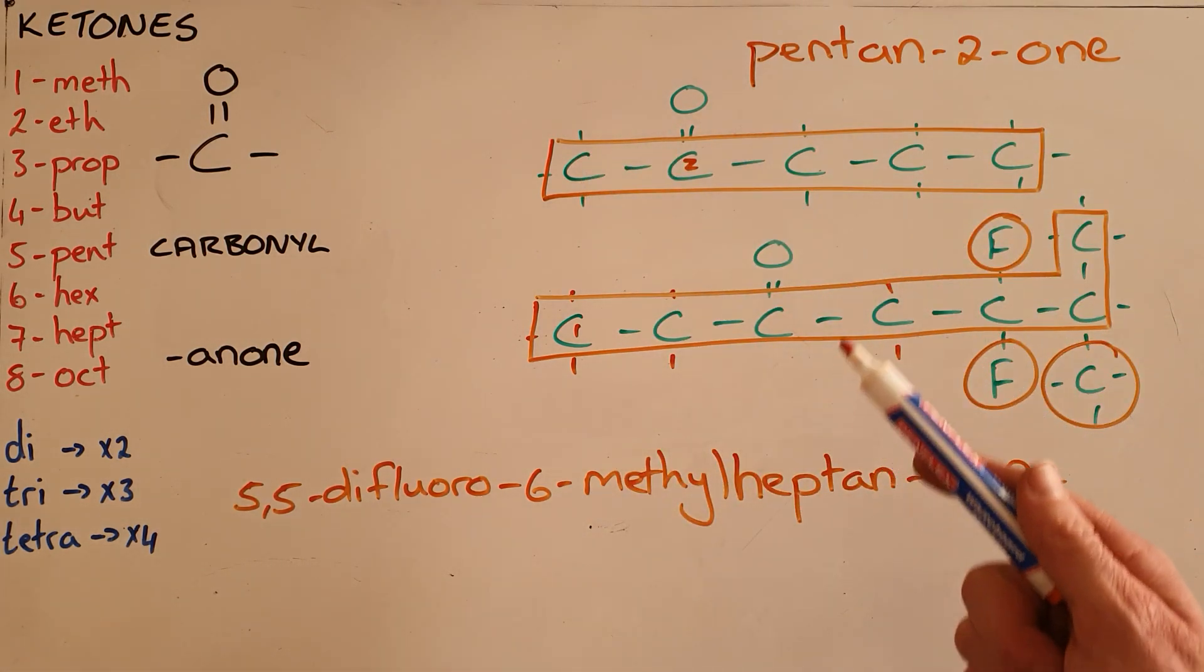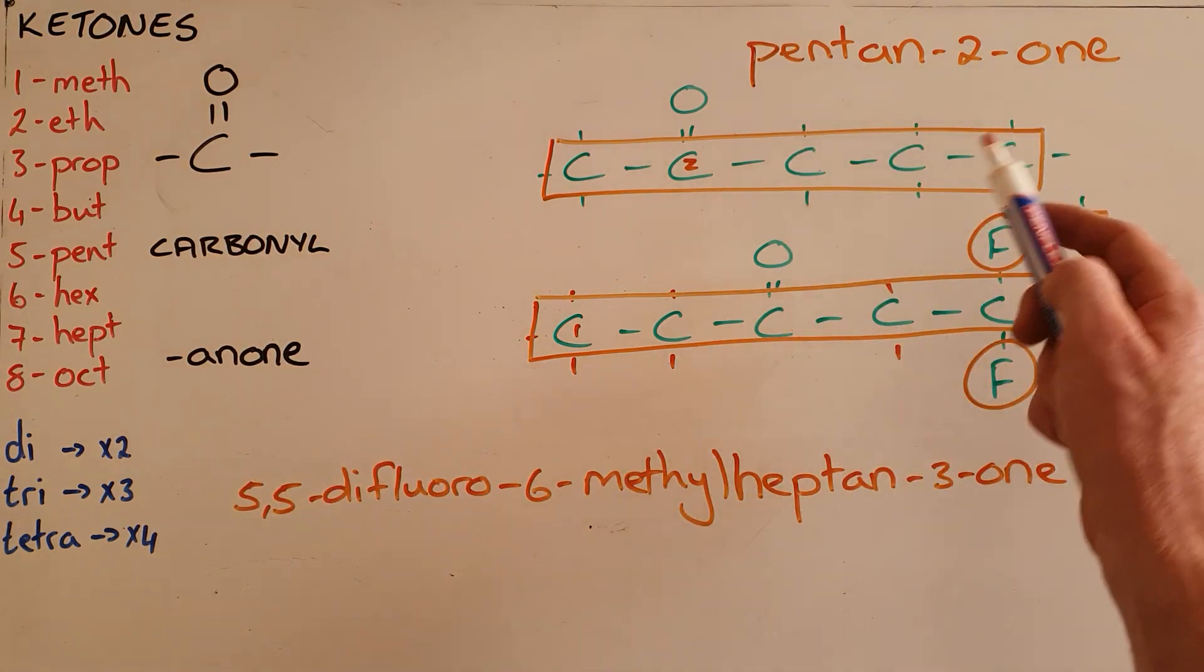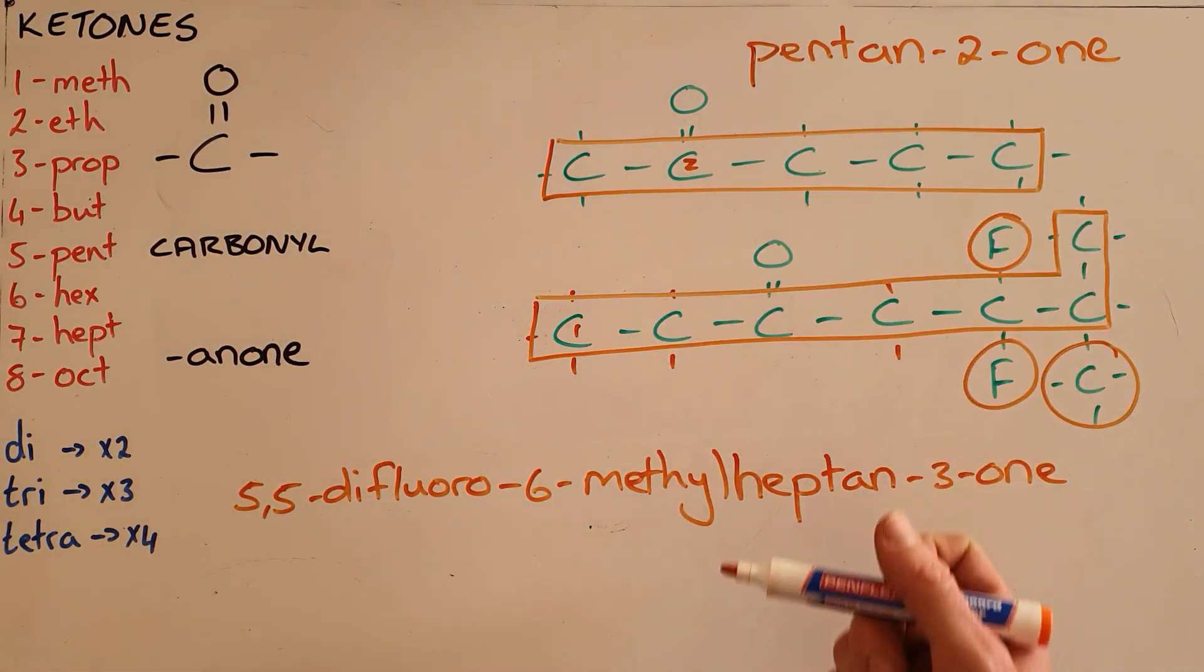So a ketone will never have a 1 in it, because if it had a 1, it would then be an aldehyde, since aldehydes have the carbonyl group placed on the first carbon.